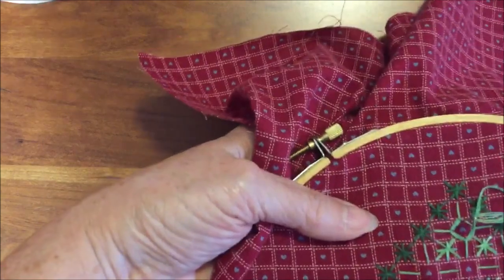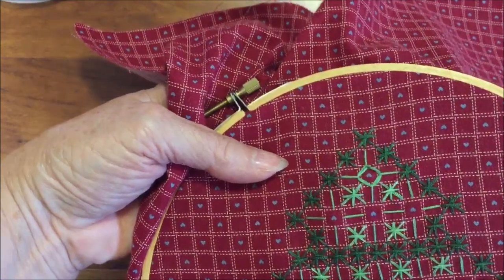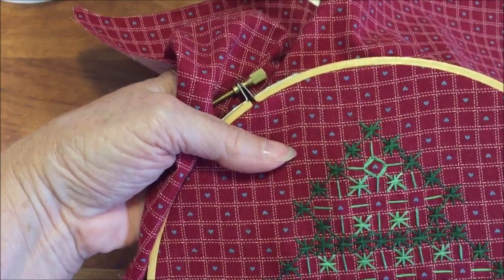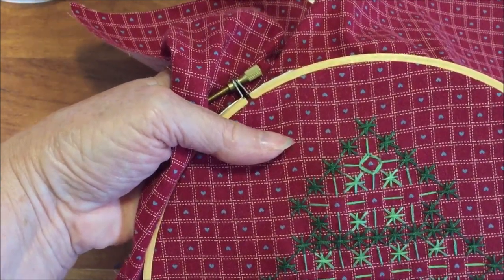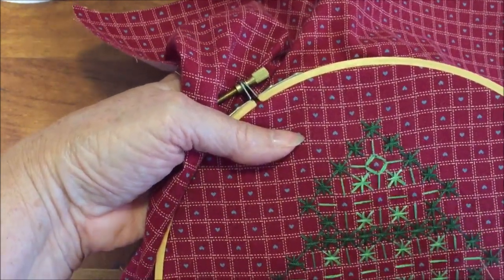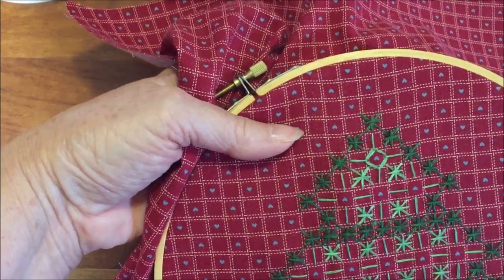Then to end the stitch you go back down where you came up. Now if this sounds a little confusing we do have a tutorial on how to do the woven circle stitch and I will have a link in the video and also in the description. Continue to fill in with the woven circle stitch wherever you're supposed to on the pattern.